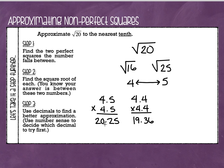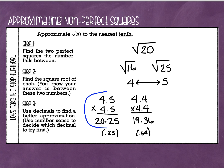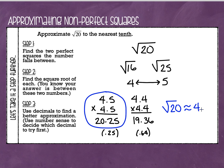Now it's just a matter of figuring out which one is closest to 20. The difference between 20.25 and 20 is 0.25, and the difference between 19.36 and 20 is 0.64. So 4.5 is actually a little bit closer. They're both really good estimates, but if I'm choosing the one that's closest, it's going to be 4.5. So the square root of 20 is approximately — that squiggly equal sign again — 4.5.